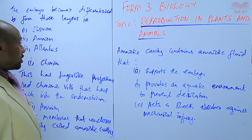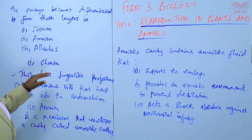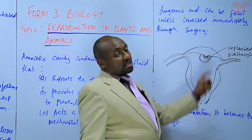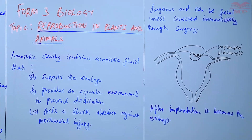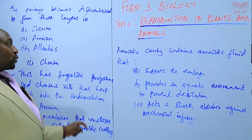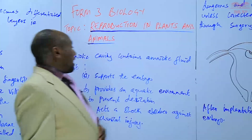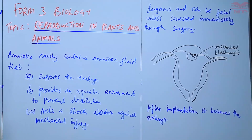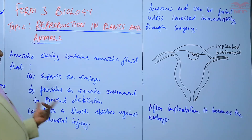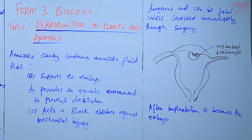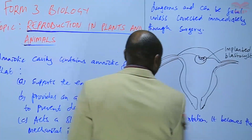The amniotic fluid acts as a shock absorber against mechanical injury. So the chorion has finger-like projections for attaching onto the uterine wall, and the amnion is a membrane that encloses the amniotic cavity. Within that cavity is amniotic fluid, which supports the embryo or fetus, provides a watery environment to prevent desiccation, and acts as a shock absorber against mechanical injury.